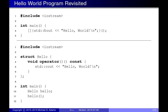In this program, the lambda expression defines an unnamed functor type, creates an object of that type, and then we apply the function call operator to it by adding parentheses. This whole line defines the type, creates the object, and applies the function call operator which prints hello world. It's a roundabout way of printing hello world, but it's a simple example to illustrate how lambda expressions work.